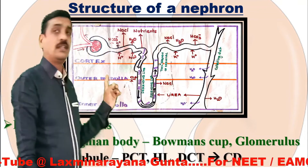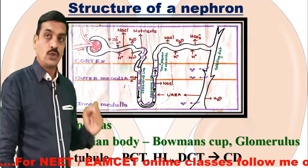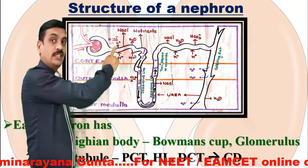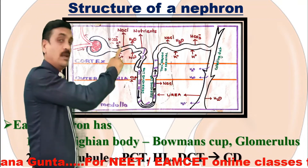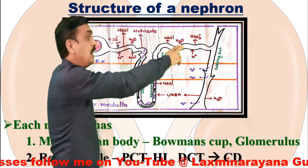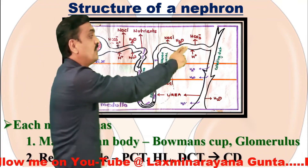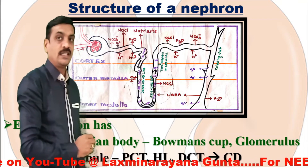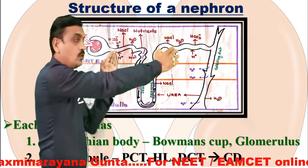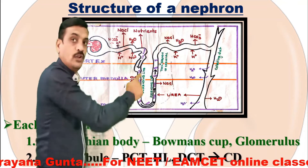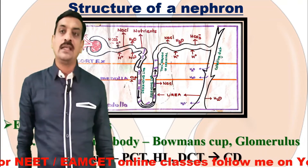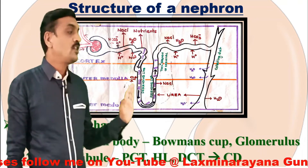The second part of a nephron is the renal tubule. The renal tubule has three regions. The first region is the proximal convoluted tubule, PCT, also called the first convoluted tubule. The second is the distal convoluted tubule, DCT, or second tubule. Connecting the PCT and DCT is a hairpin-shaped structure called the loop of Henle or Henle's loop.